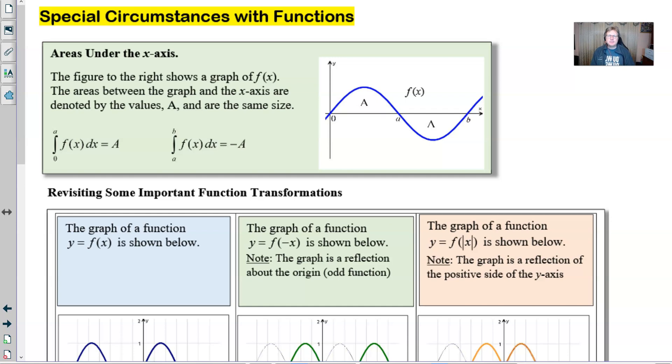Now, this particular lesson begins with special circumstances with functions. And we've talked about this, but like I said, I want to formalize this idea of area under the x-axis. It says the figure to the right shows a graph of f(x). And the areas between the graph and the x-axis are going to be denoted by these values, capital A, and I want you to all trust that they are the same size. Now, what's important to understand is that we throw this idea sometimes around in calculus that, oh, in calculus area can be negative. That's not right. Under no circumstances can area ever be negative.